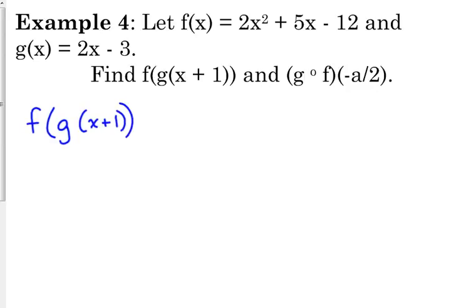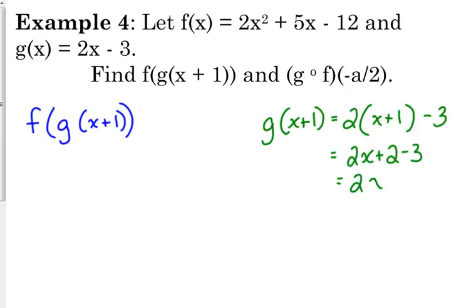I'm going to start by plugging x plus 1 into my g of x function. So I'm going to kind of go over here to the side, and I'm going to do that g of x plus 1 first. So that means I've got 2 times x plus 1 minus 3. I'm replacing the x in my g of x function with x plus 1. I need to simplify that. That's 2x plus 2 with a minus 3 on the end, so that gives me 2x minus 1.